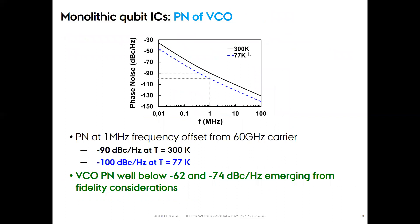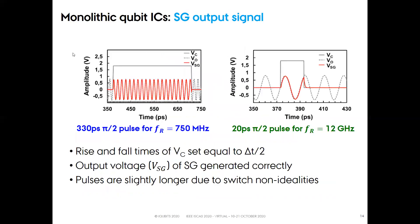This plot reports the phase noise of the VCO at 300 Kelvin in black and 77 Kelvin in blue. The phase noise at 1 MHz frequency offset from the 60 GHz carrier amounts to −90 dBc/Hz at 300 Kelvin and −100 dBc/Hz at 77 Kelvin. In both cases, the phase noise is well below −62 and −74 dBc/Hz as required from fidelity considerations. These two plots report the output signal VSG of the signal generator for a Rabi frequency of 700 MHz and 12 GHz. In both cases, the rise and fall times of the control voltage VC of the switches was set equal to delta-t/2, and the output voltage VSG was generated correctly in both cases despite the pulses being slightly longer due to switch non-idealities.